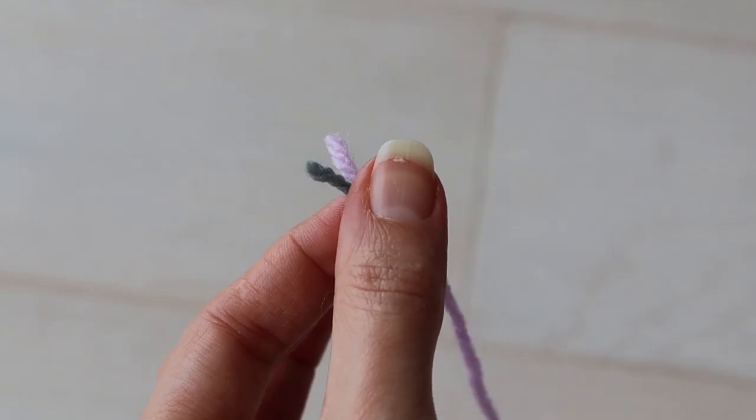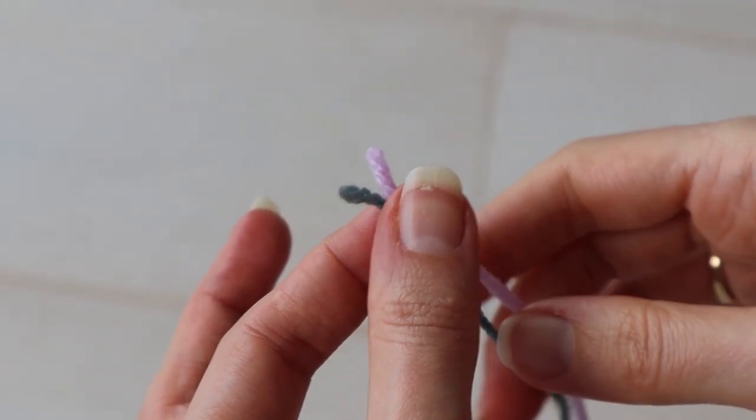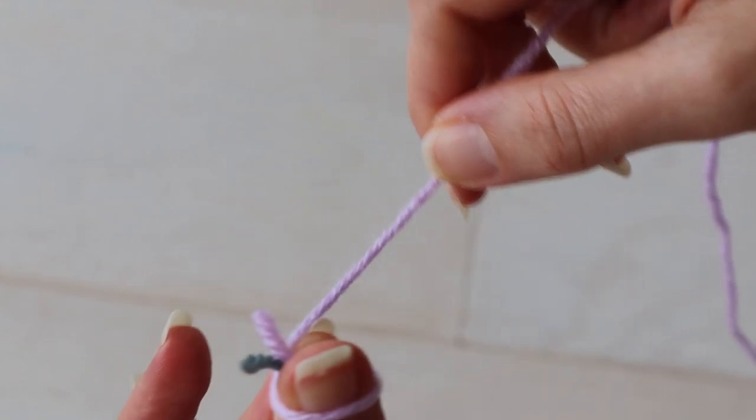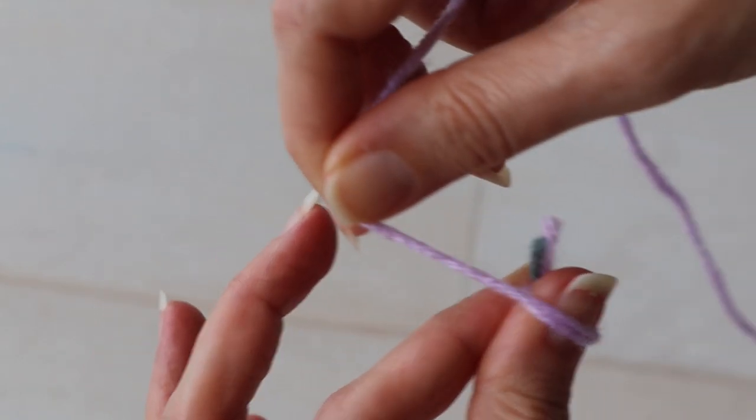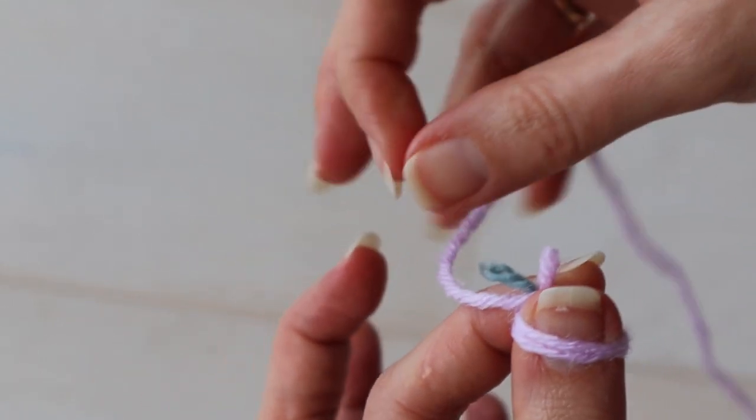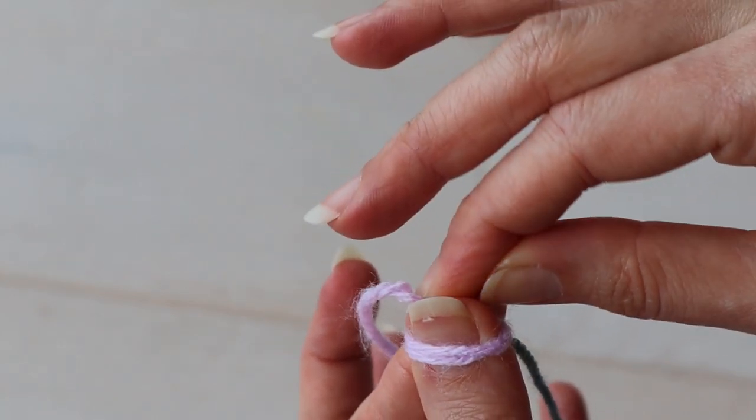You're going to pinch the two yarns in your thumb and forefinger with a tiny little bit sticking out the top. Then with one of the strands, wrap around your thumb twice. And then lay that strand in front of your two little ends. Then tuck them down behind the strand.